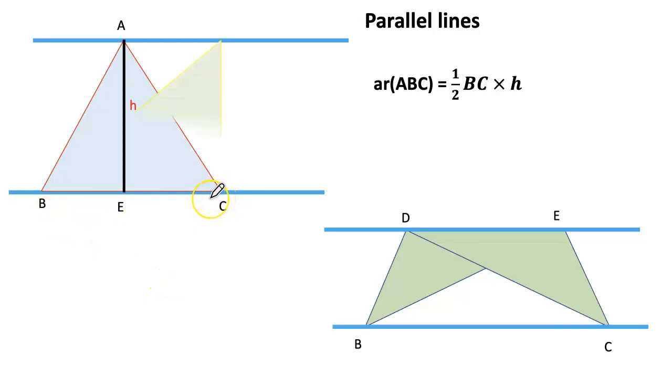Let us see one more triangle with the same base. Triangle BDC. The base is BC. The height is CD. So area equals to half into BC into H. So here we can see that both the triangles having same base and between the same parallels, their area becomes equal.